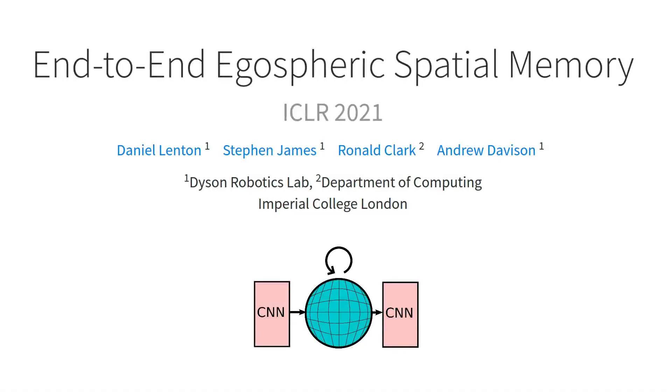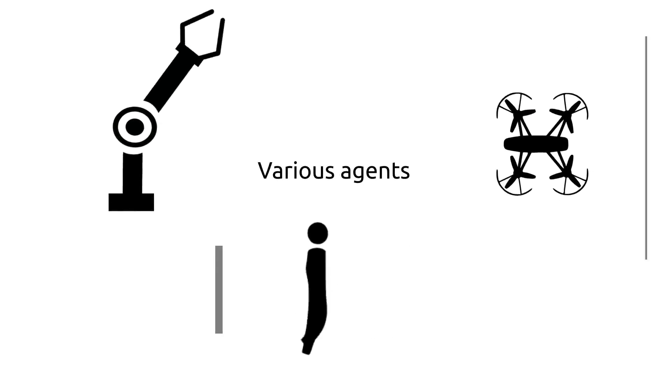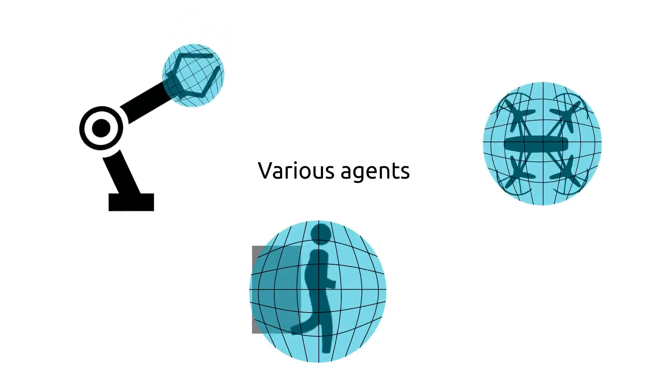We present End-to-End Egospheric Spatial Memory, or ESM, a memory module for general embodied artificial intelligence. ESM encodes the surrounding scene into an egosphere, which travels with an agent as it moves through the world.